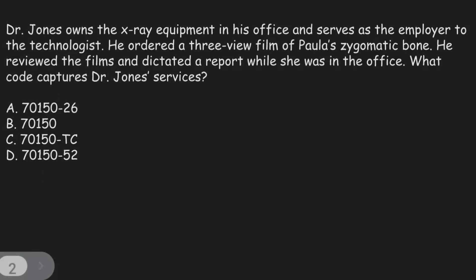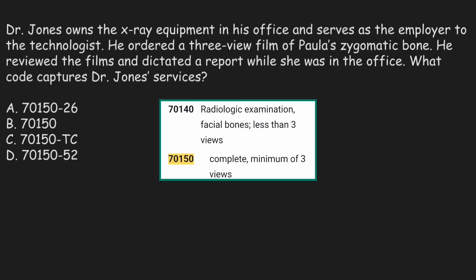In the options you can see there is only one code: 70150. The code 70150 is for radiologic examination, facial bones, complete, minimum of three views. Now let's read the question and highlight the key terms. Doctor Jones owns the x-ray equipment in his office and serves as the employer to the technologist. He ordered a three-view film of Paula's zygomatic bone. He reviewed the films and dictated a report while she was in the office. What code captures Dr. Jones' services?